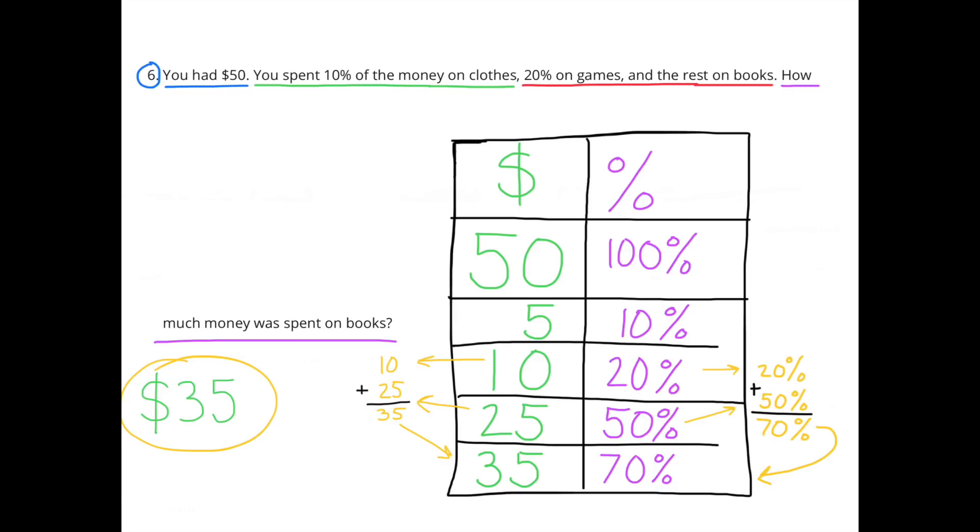In the table, $50 represents 100% of the money. I made the 100% 10 times smaller to get 10%, so I needed to make the $50 10 times smaller to get $5. I know that 10% times 2 equals 20%, and $5 times 2 equals $10. So 10% represents $5, and 20% represents $10.